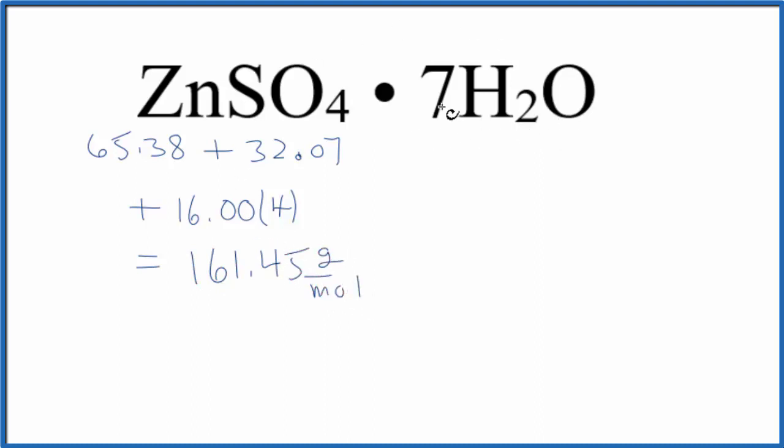For the heptahydrate, the seven water molecules, we're going to multiply seven times the atomic mass for hydrogen 1.01, but we have two of those, plus oxygen is 16.00 grams per mole. So we multiply that all together, and we get 126.14 grams per mole.